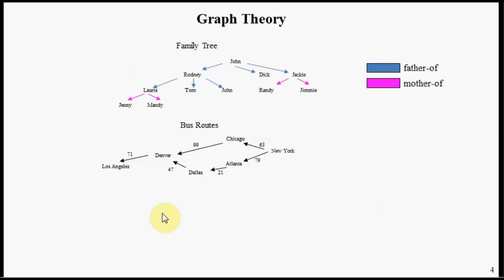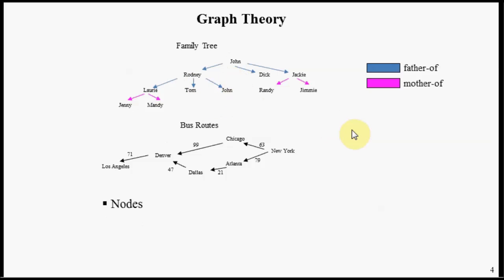We're going to start by doing a little graph theory here. In front of us are two graphs: a family tree and a graph of bus routes. Some of the components of a graph consist of the following — the notion of something called nodes. In this family tree graph, the nodes happen to be the names of people. A second component of graphs are things called connections, or edges, and they happen to be the arrows we see between nodes.